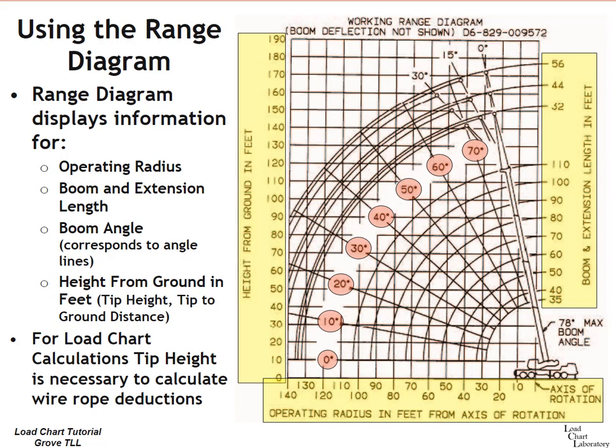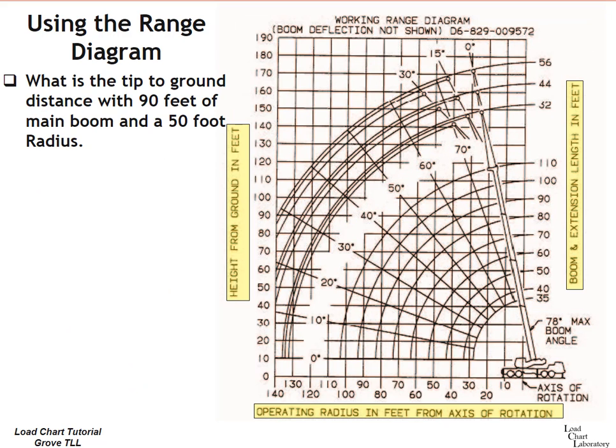A common mistake made on load chart problems is a miscalculation of the wire rope weight, and that miscalculation may be because the range diagram was not interpreted properly and the tip to ground height was incorrect. Let's go ahead and take a closer look.